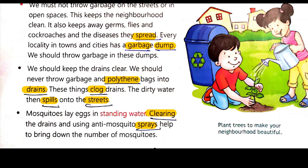So this is how we can keep our neighborhood clean. Dear students, this is all about Chapter 2, Our Neighborhood. In this chapter we discussed different places in our neighborhood, places for recreation where people meet to have fun and do many activities, and how we can take care of our neighborhood. To summarize: the area around your house is your neighborhood. Most neighborhoods have a market, some have a school, a hospital, a police station, a post office, and a bank.